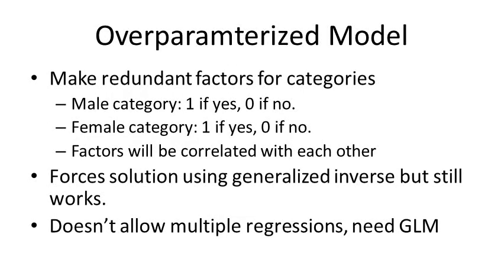In the over-parameterized model, you have one male category and one female category, each coded as one for yes or zero for no. In this case, they will be highly correlated because when one is female, they're probably not male and vice versa. This forces the solution to use the generalized inverse, but it still works — you just can't use multiple regression and will need to use GLM.